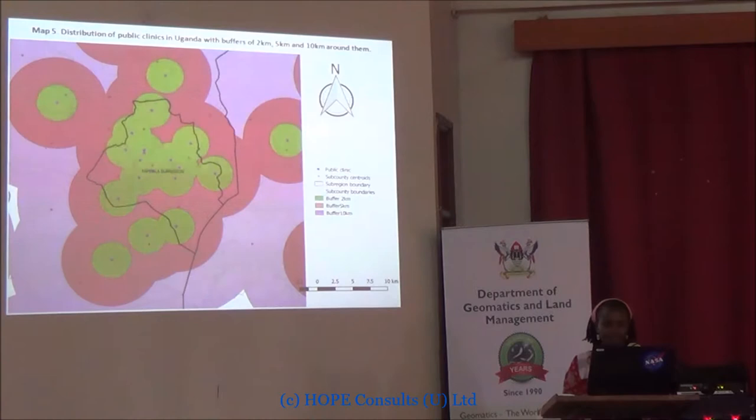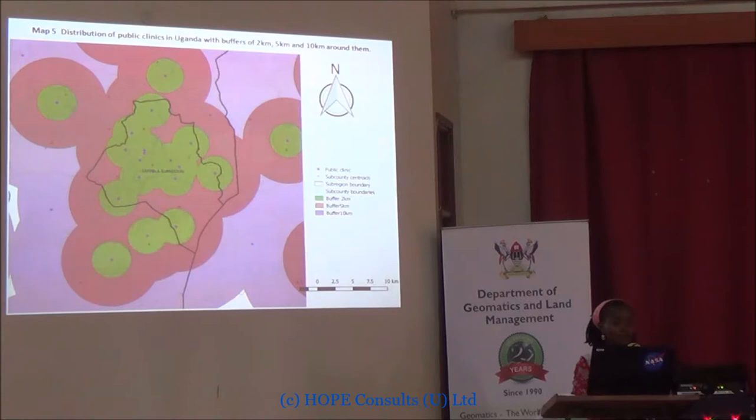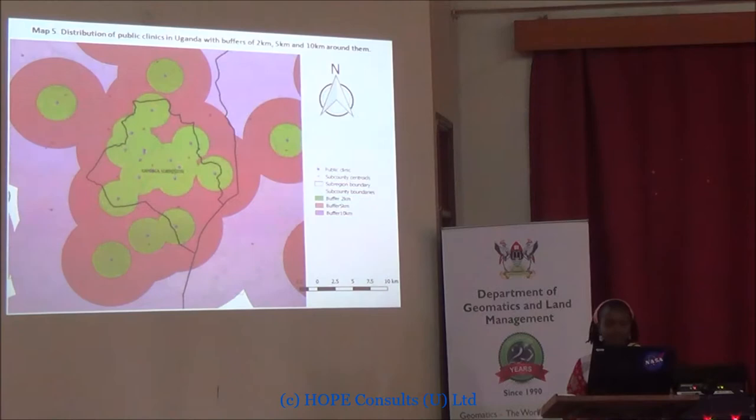This is the color map showing Kampala, which is very well distributed. At the 5km distance — shown in dark pink — the whole district is well covered. At 2km, there are just a few pockets not covered, but at 5km it is all covered by facilities.